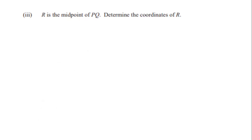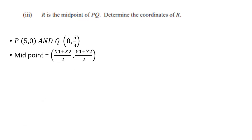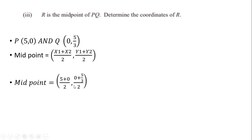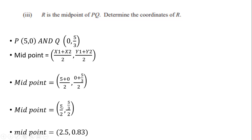Part 3 says R is the midpoint of line PQ — determine the coordinates of R. We have P(5, 0) and Q(0, 5/3). The midpoint formula is ((x1 + x2)/2, (y1 + y2)/2). That gives (5 + 0)/2 = 5/2, and (0 + 5/3)/2 = (5/3)/2 = 5/6. So the midpoint R is (2.5, 0.83), which is the same as (5/2, 5/6).